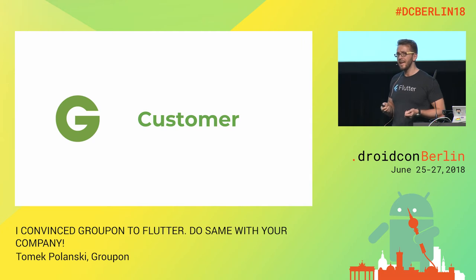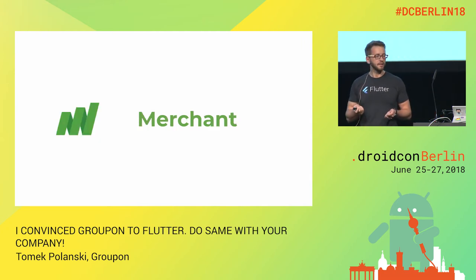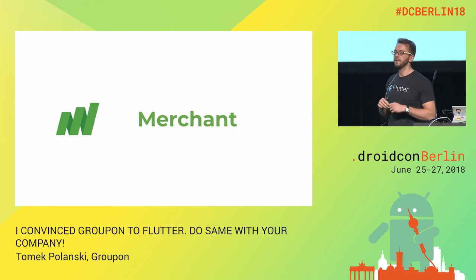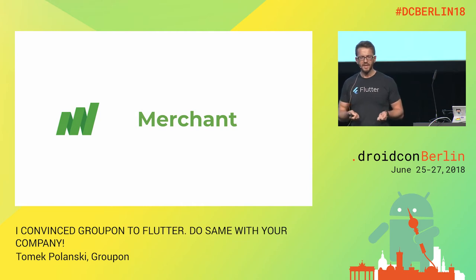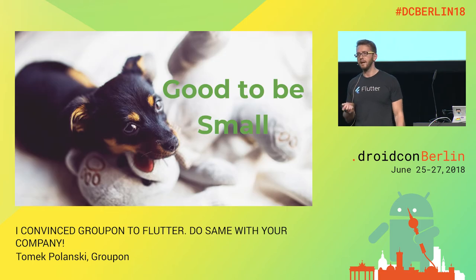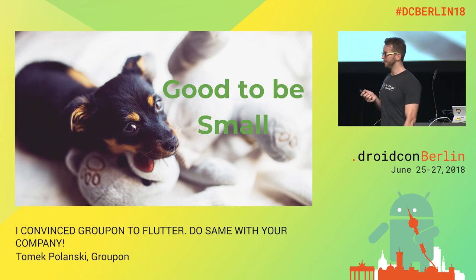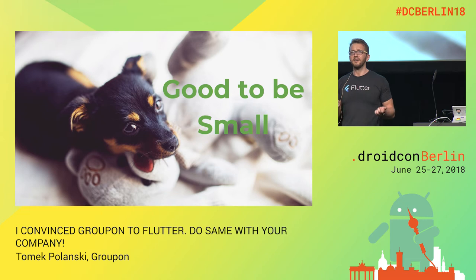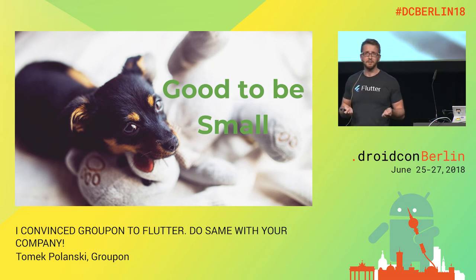The team behind the customer app is also large. The second application Groupon has is the merchant application, used by business owners to track deals. Because there are fewer merchants than customers, the merchant application is smaller and so is its team. But being small is not always a bad thing — with a big team, you need everyone on board to try something, which takes time. Small, agile teams can rapidly test something and validate if it works.